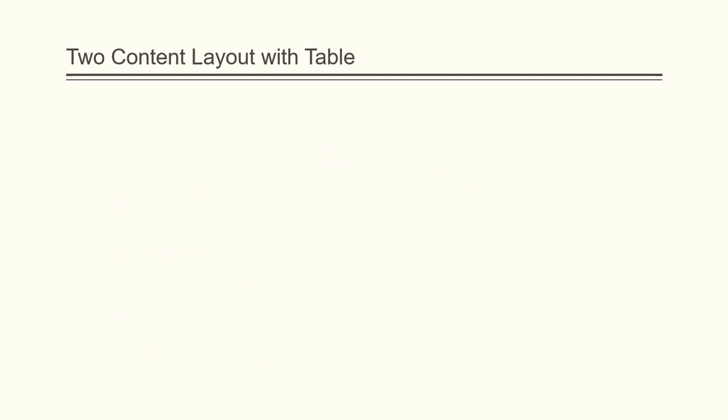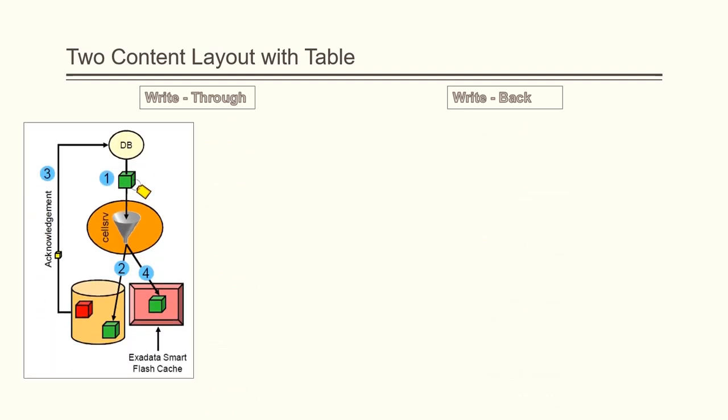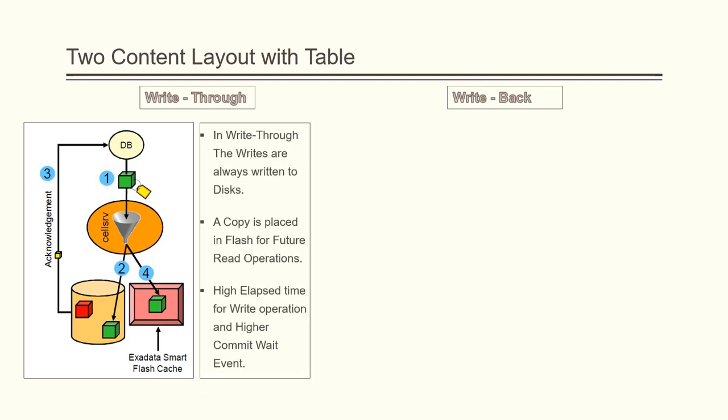There are two modes of Exadata Smart Flash Cache: Write Through and Write Back. In Write Through mode, the flash data is only used for read operations. When it comes to writes, the data is always written to disk first and the acknowledgement is given to the database. A copy of the written block is also placed in the flash for upcoming read operations. As the data is always written to disk, the elapsed time is higher and it causes high commit wait events, specifically the log file sync wait event.